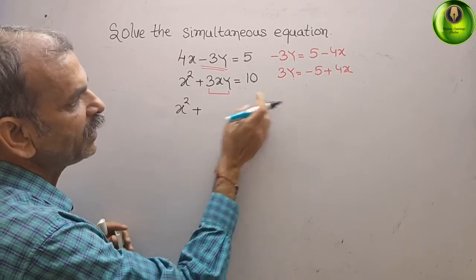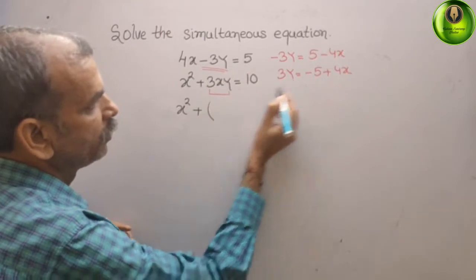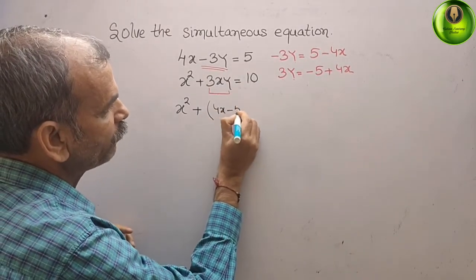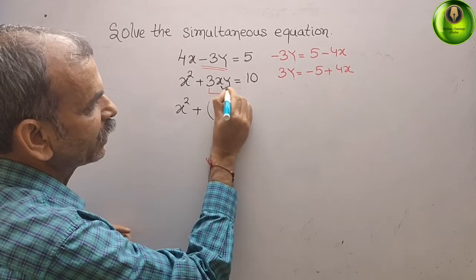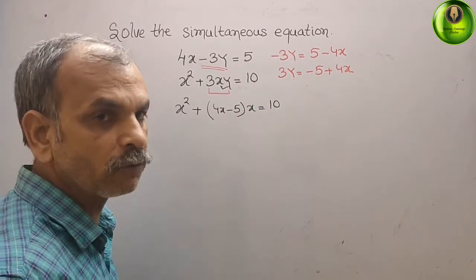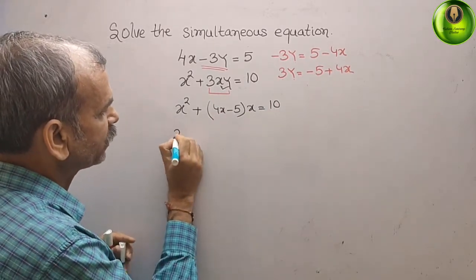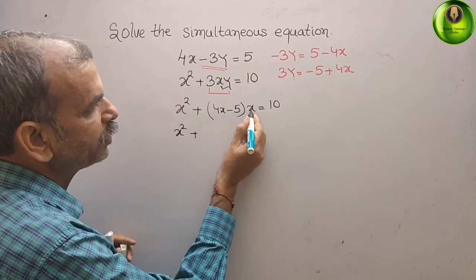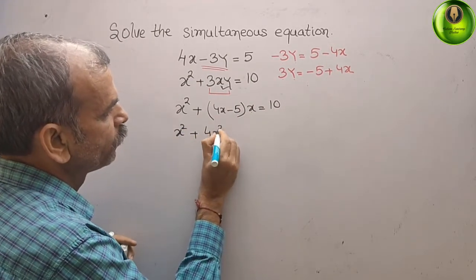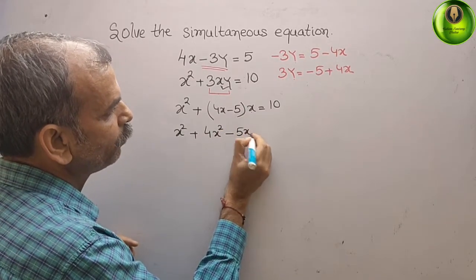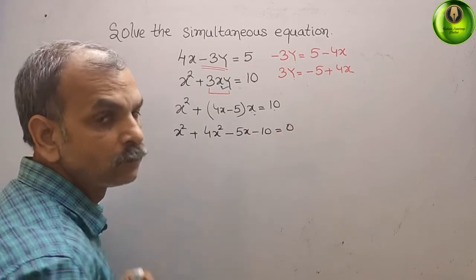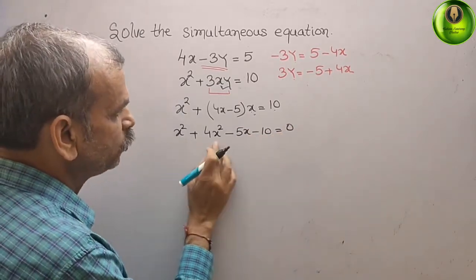Now substitute this 3y into the second equation. We get x squared plus x times (4x minus 5), which equals 10. Expanding: x squared plus 4x squared minus 5x, bringing everything to one side gives minus 10 equal to 0.